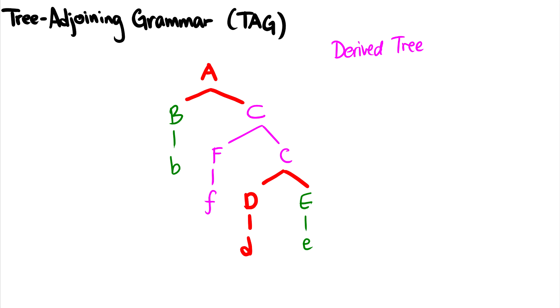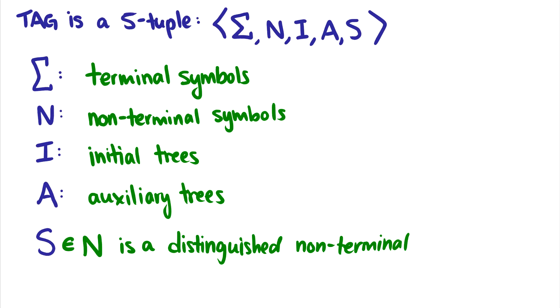So tree adjoining grammar is a little bit more powerful than context free and about the same power as the context sensitive grammar. So TAG is a five-tuple consisting of sigma, N, I, A, and S. Sigma is a set of terminal symbols. We've seen this before.